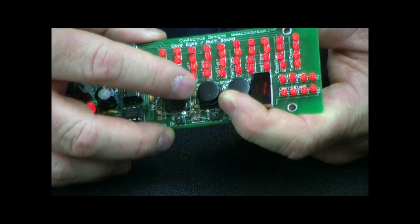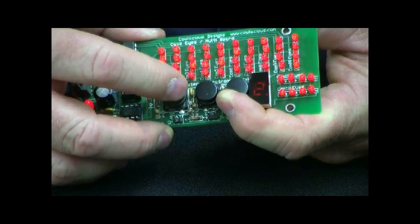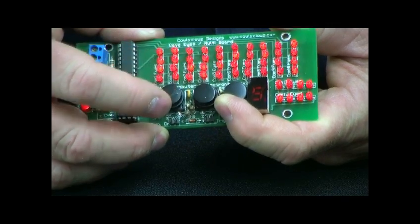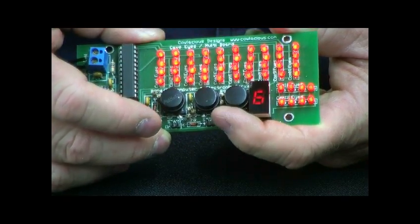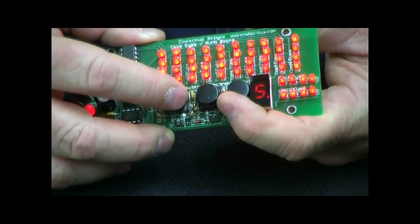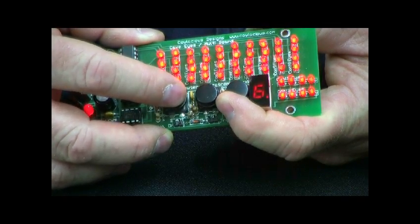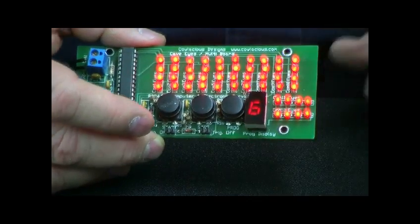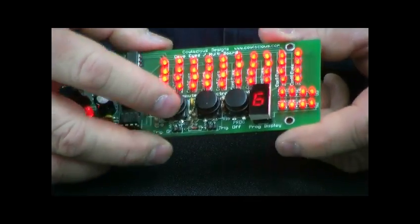Again, I can hold the program button down. And I can adjust that back up to, let's say five, four, all the way back up to nine. So you have nine brightness levels that you can set these to also.